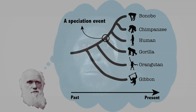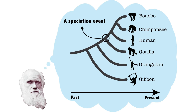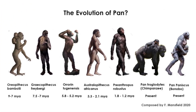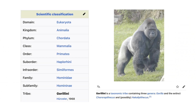The taxon tribe Hominini was proposed to separate humans, genus Homo, from chimpanzees and gorillas on the notion that the least similar species should be separated from the other two. However, later evidence revealed that Pan and Homo are closer genetically than are Pan and Gorilla. Thus, Pan was referred to the tribe Hominini with Homo, and Gorilla became the separated genus, referred to the new taxon, tribe Gorillini.